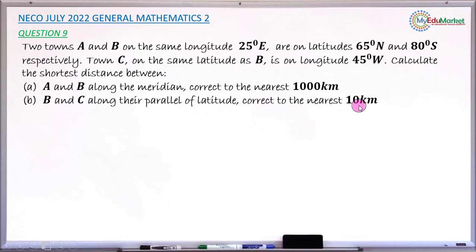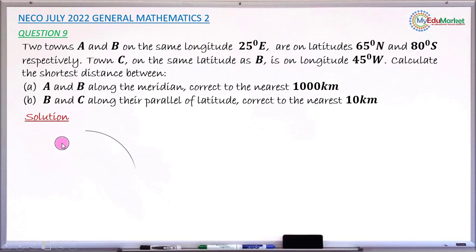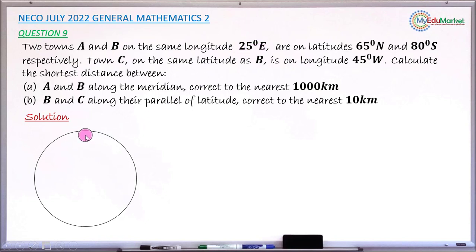To answer this question on longitude or latitude, you first interpret all the statements into a drawing. Draw a very large circle to represent the Earth. Since towns A and B are on longitude 25 degrees east, draw that longitude first on the circle.